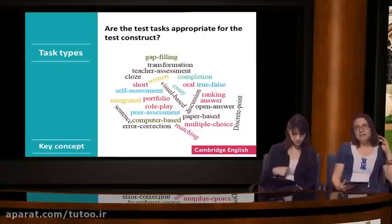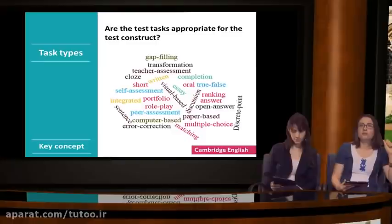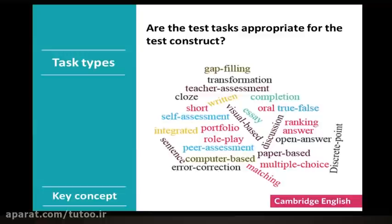So far we've talked about the cognitive aspect of a test construct. Now let's take a look at the task element of the construct. The key question we have to ask ourselves is: are the tasks appropriate for the test construct? In other words, do the selected tasks in our test activate appropriate cognitive processes? There are many different types of tasks, and we've shown you a selection of task types in this word cloud on the screen. We've included task types such as discrete point tasks - discrete means they're separate, independent questions - integrated tasks, multiple choice tasks, and so on. We'd like to ask you to quickly type in the task types you're most familiar with.